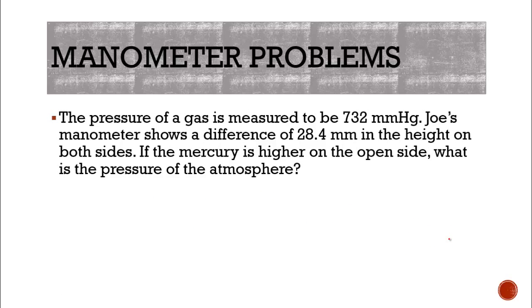So how could we use that information? What if we assigned some numbers to these gases in the atmosphere? So we know the pressure of a gas is measured to be 732 millimeters of mercury. So again, we've got our gas container. It has 732 millimeters of mercury. We already know we've pressurized it to be that. Hook it up to a manometer, or Joe hooks it up to a manometer, and it shows a difference of 28.4 millimeters in the height on both sides. So we know it's going to be higher on one side by 28.4 millimeters.